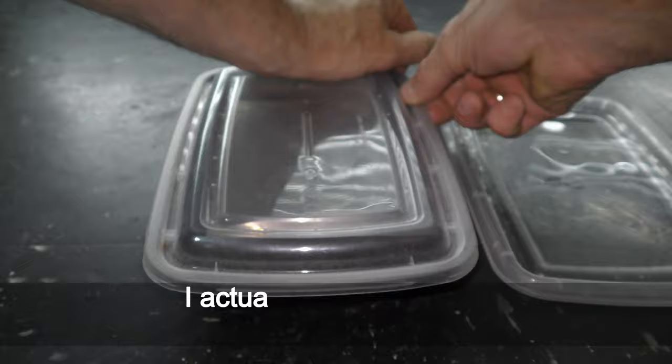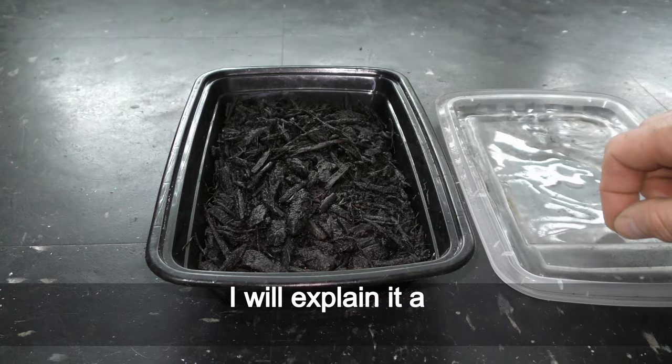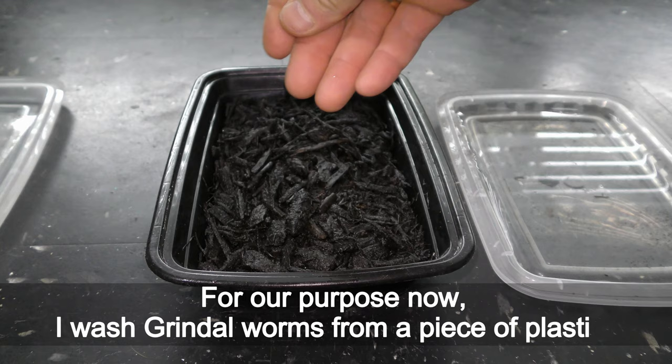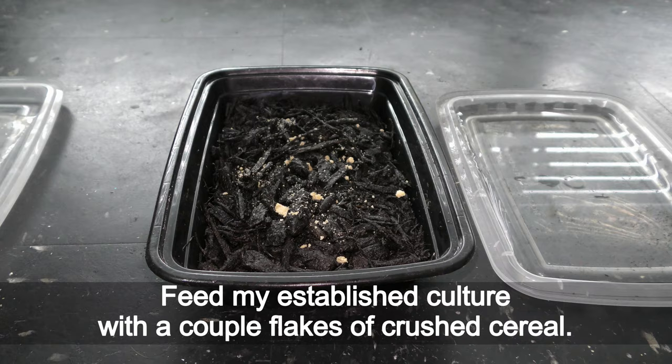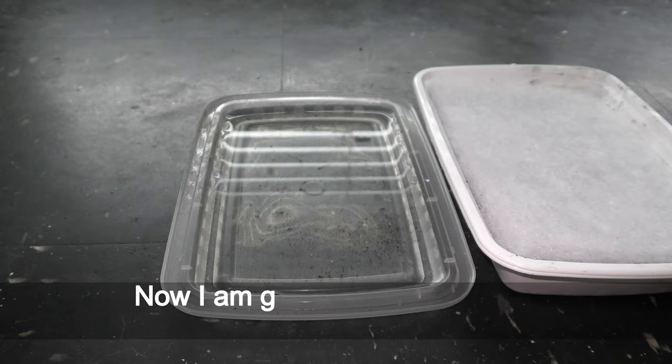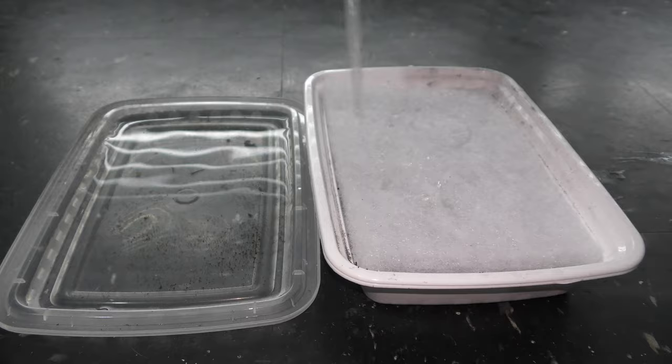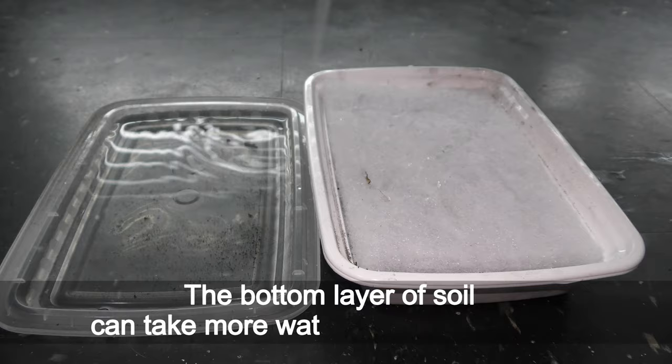Now let's get some grindal worms without springtails or any other creatures. I actually prefer to keep grindal worms with springtails in one box. I will explain it all in a different video about springtails. For our purpose now, I wash grindal worms from a piece of plastic. Feed my established culture with a couple flakes of crushed cereal. Now I am going to use a pipette to move grindal worms to a new box. Put them right on top of the polyester layer.